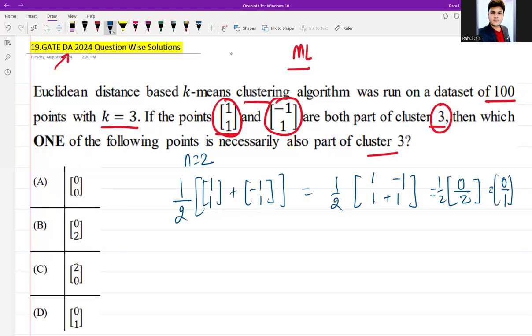So the centroid of the cluster is (0,1). It is the centroid of the cluster. Now we need to go option by option, each option we need to scan.